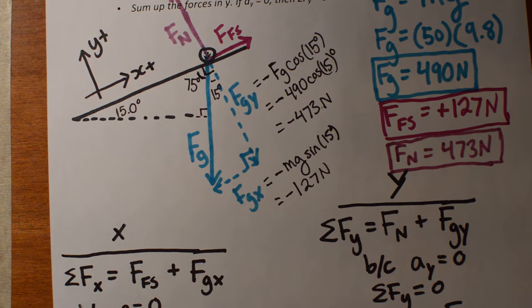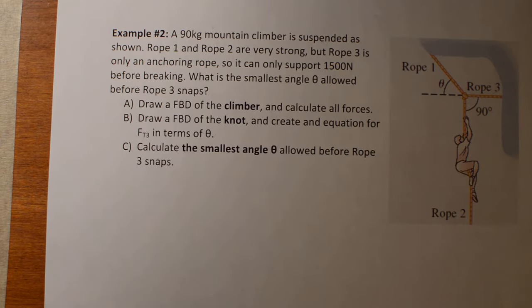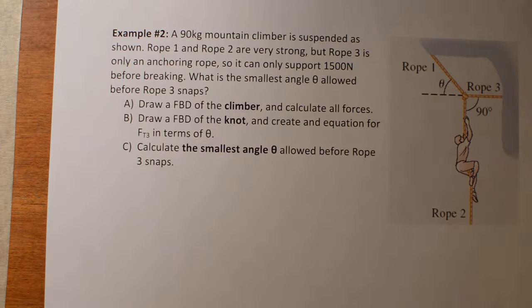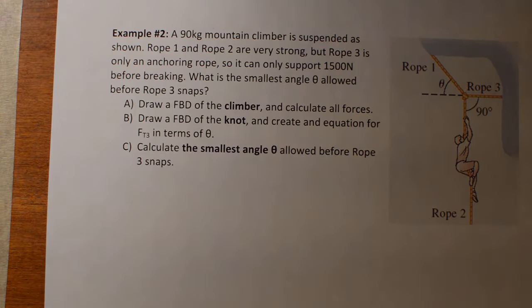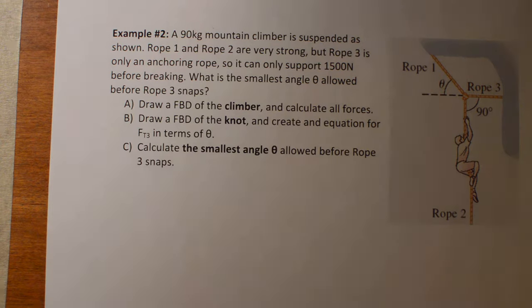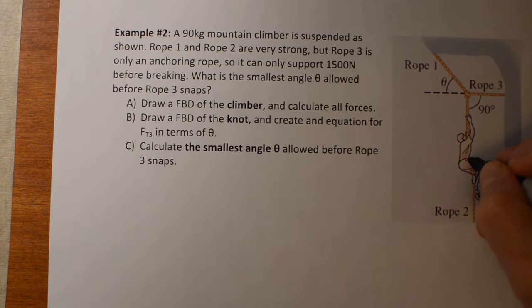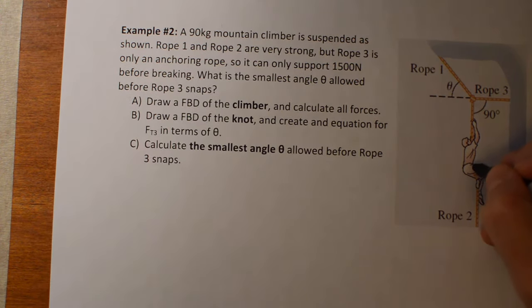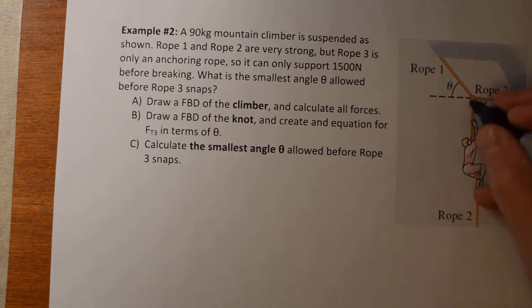Let's do a trickier one. In this problem, we're going to try to go all the way through using just variables and not calculating too many things — you'll see why that's important as we go. This problem is about a rock climber who is 90 kilograms and is hanging from rope two.